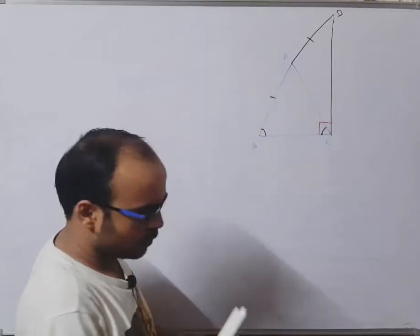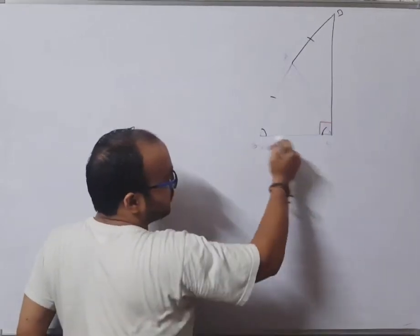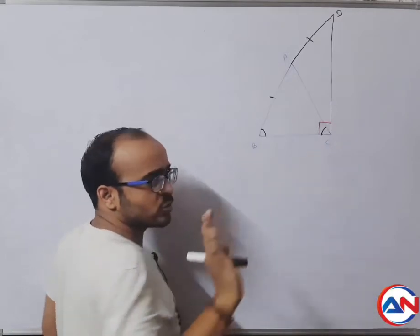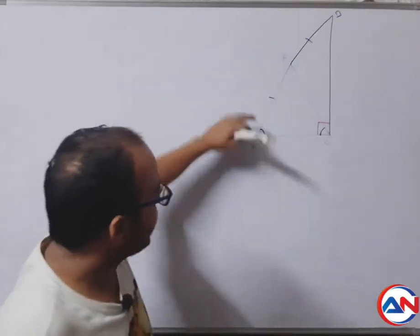We have to prove it. It is not given. What is in triangle ABC? ABC is an isosceles triangle. It means that AB is equal to AC.